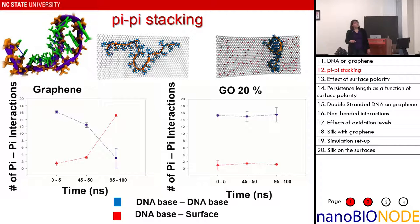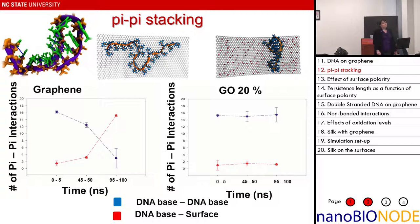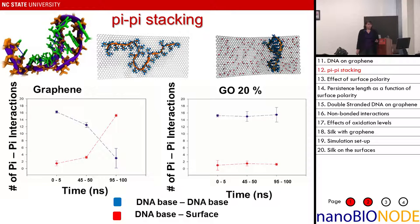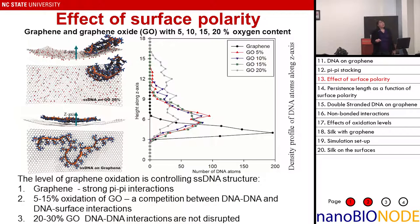We can quantify this through calculating pi-pi interactions. The blue line is DNA-DNA base interactions; the red line is DNA-base-surface interactions. On graphene, we lose the DNA base-base interactions and pick up DNA-surface interactions — pi-pi interactions with the surface are obviously dominant and the DNA spreads out. For 20% graphene oxide, we basically retain most base-base interactions, and only one pi-pi interaction with the surface forms without increasing further.